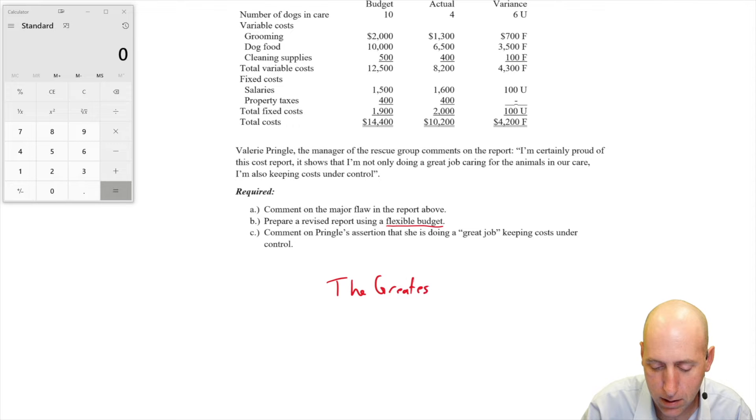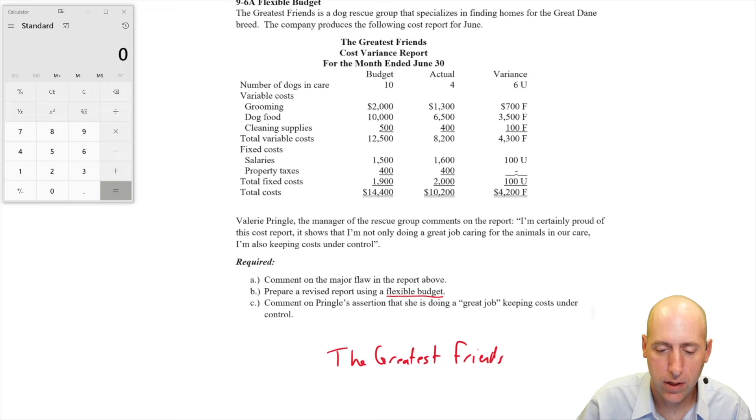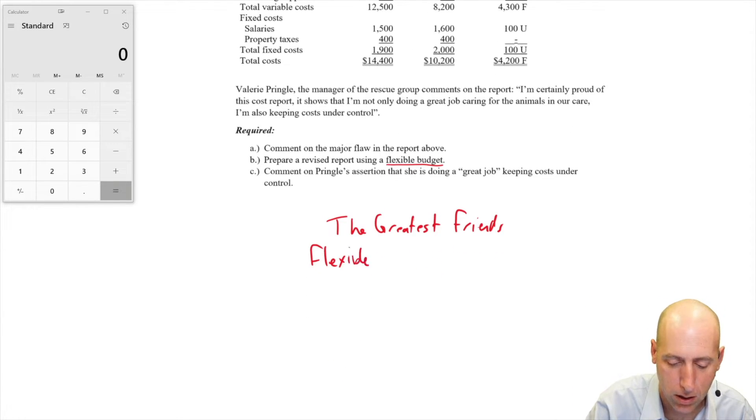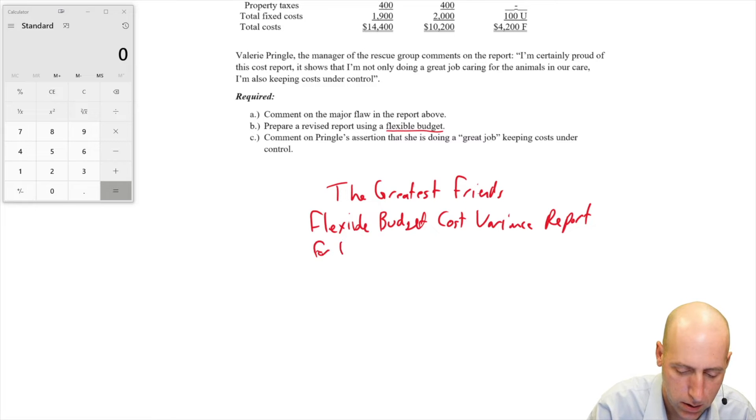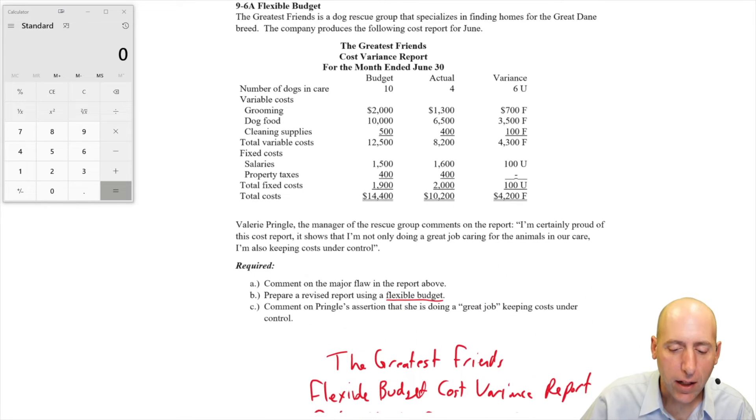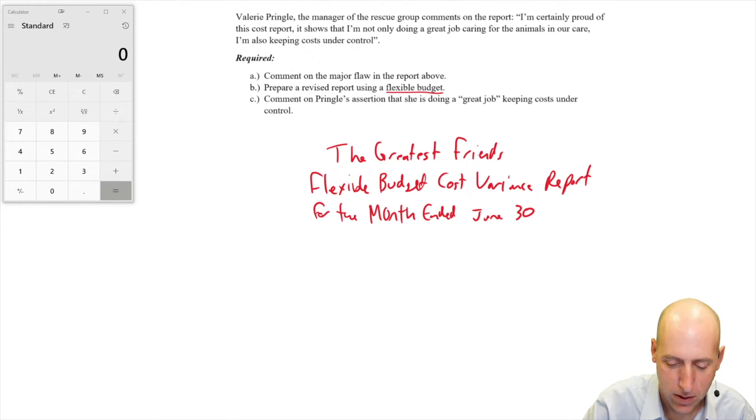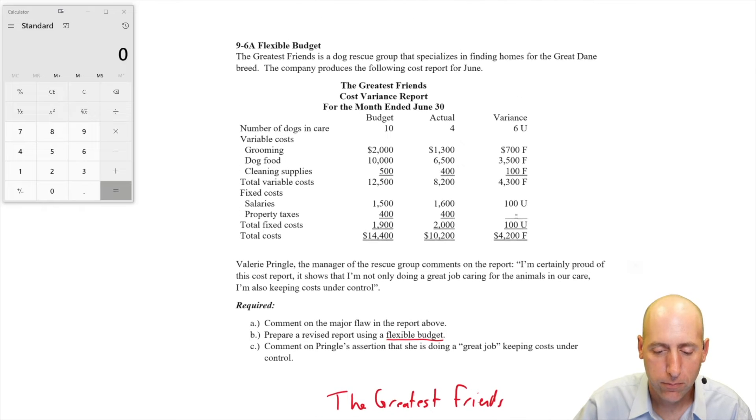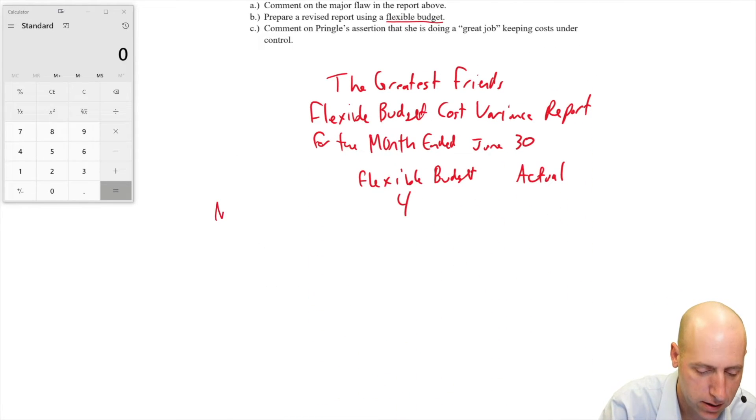The Greatest Friends. We'll call this a cost variance report. We'll call it a flexible budget cost variance report. And this is for the month end of June 30th. So what I'd like to do is make a new budget, a flexible budget based on four.